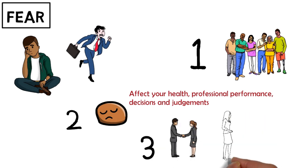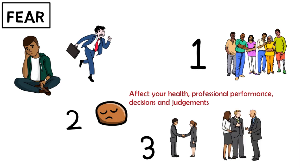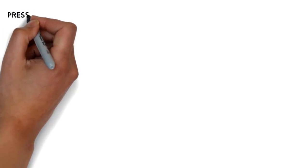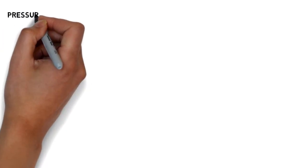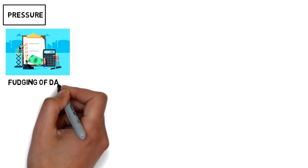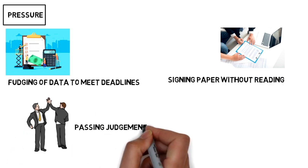The next point which affects ethics is pressure. Modern living is full of pressure. Pressure clouds judgment and clear thinking, leading to ethics and values being compromised. Fudging of data to meet deadlines, signing papers without reading, passing judgment without understanding.